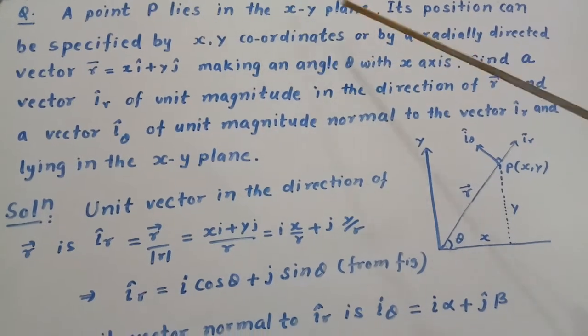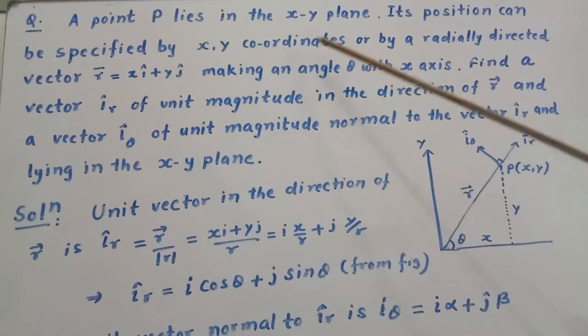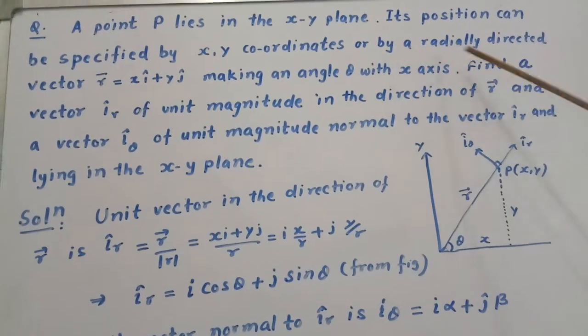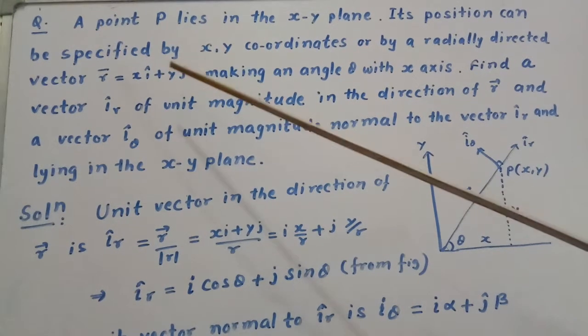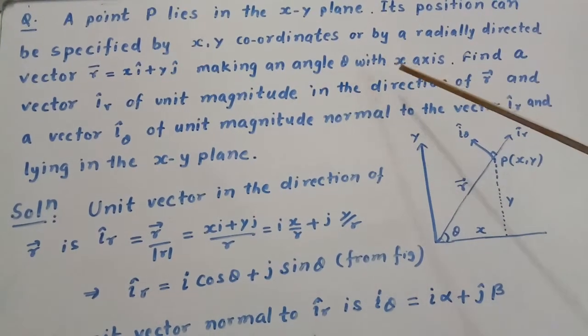A point P lies in the xy plane. Its position can be specified by xy coordinates or by a radially directed vector R equal to x i cap plus y j cap making an angle theta with x-axis.